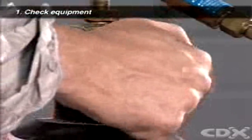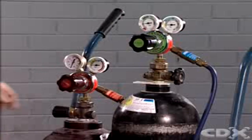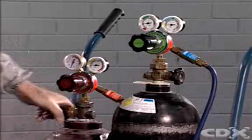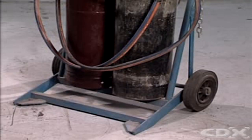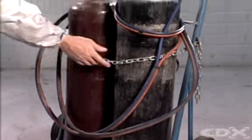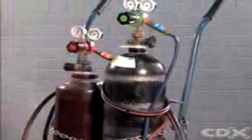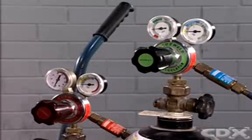First, make sure that the gas flow from both the oxygen and the acetylene cylinders is turned off tightly. The two cylinders are secured in an upright position, usually on a wheeled trolley.